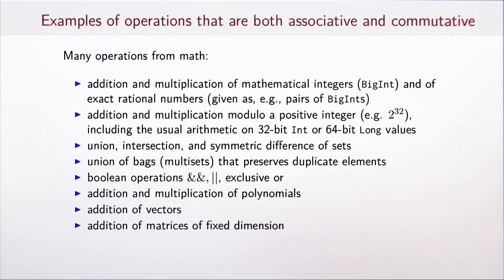Moreover, if we perform addition and multiplication modulo some positive integer, such as 2 to the 32, and this includes the usual arithmetic operations on int and long data types in Scala, we also obtain operations that are both associative and commutative. Another important class of operations that are associative and commutative are operations of union and intersection. Symmetric difference of sets is also an example of such operation.